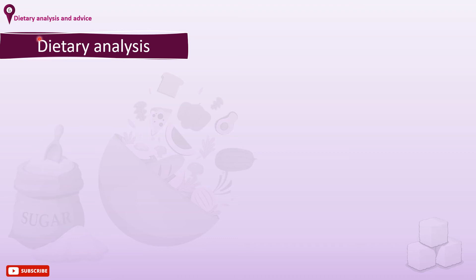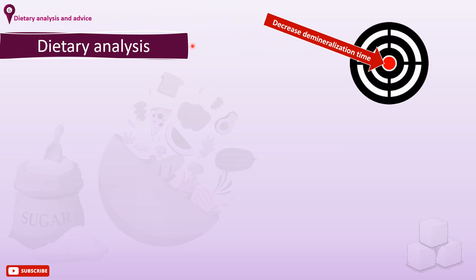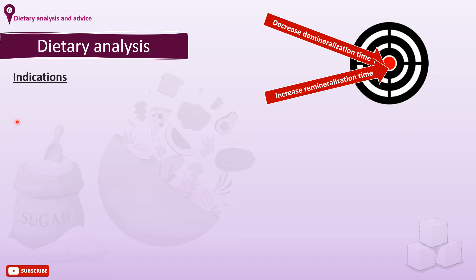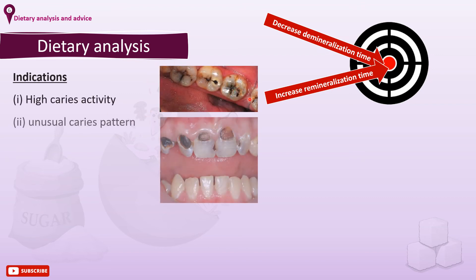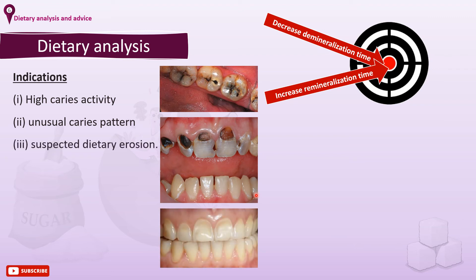Why do we do dietary analysis? The aim is to decrease the time during which teeth are at risk of demineralisation and increase the potential remineralisation period. Dietary analysis is specially indicated in the following cases: in case of high caries activity, in case of an unusual caries pattern — as you can see, caries spreads all over the upper teeth while the lower teeth are all sound — and in case of suspected dietary erosion, especially in the upper anteriors.